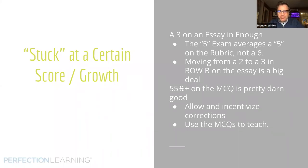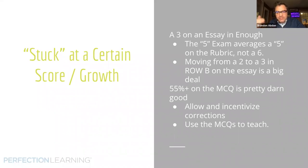Work with those two or three kids who might earn the sophistication point individually, and really target the writing at that two or three in row B. You all know if they don't have a thesis, they're done. But you've been teaching thesis since the beginning of the year. If you're struggling with that point two or three and you're struggling with commentary, it's okay — so is everybody else. Keep at it. Donna noted: their pot of gold is in row B. Absolutely. Donna and I were at the same table reading lit essays. What everyone needs to realize: 55% or more on the multiple choice is pretty good. Allow and incentivize corrections when they do practice multiple choice, and use the multiple choice to teach.